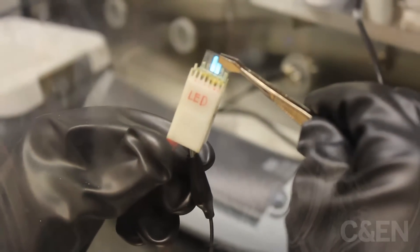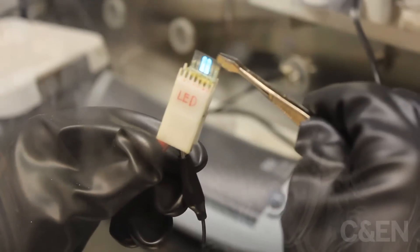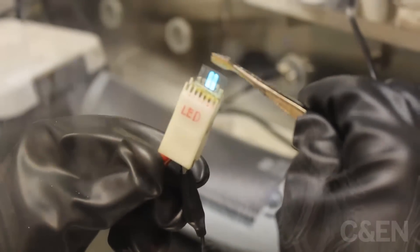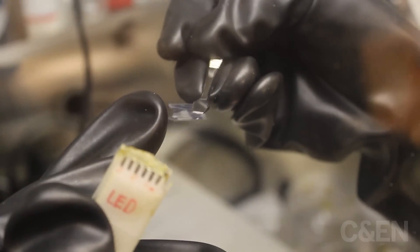These electrodes have a very thin layer of silver nanowire coated on the plastic substrate. And because the materials here are very stretchable,